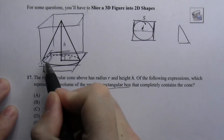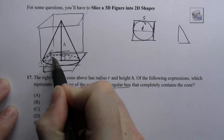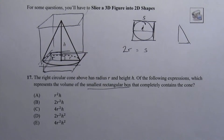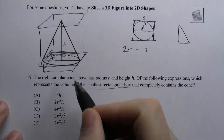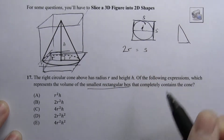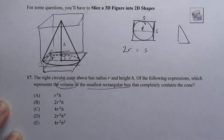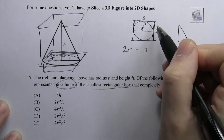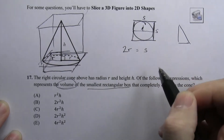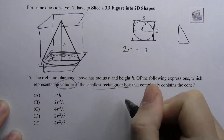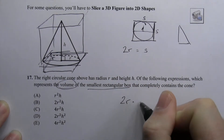That tells us that D, which is also 2R, is going to equal the side of the rectangular prism. The base of it is going to be S times S. The question is asking for the volume of the rectangular box, and we already know two of the sides — the base and the width are both 2R. So we have 2R times 2R.